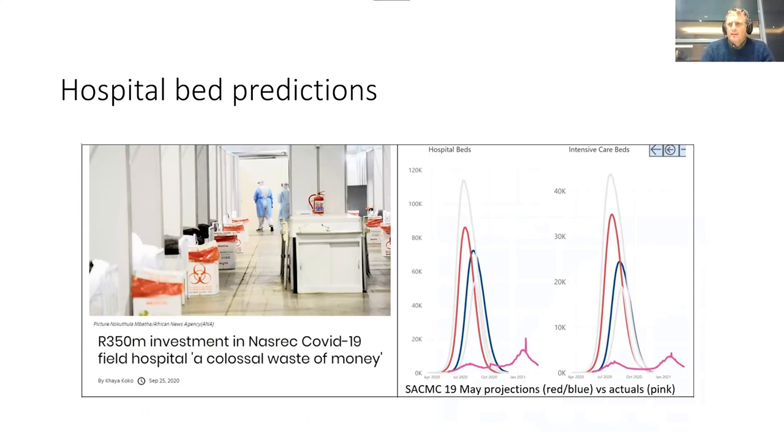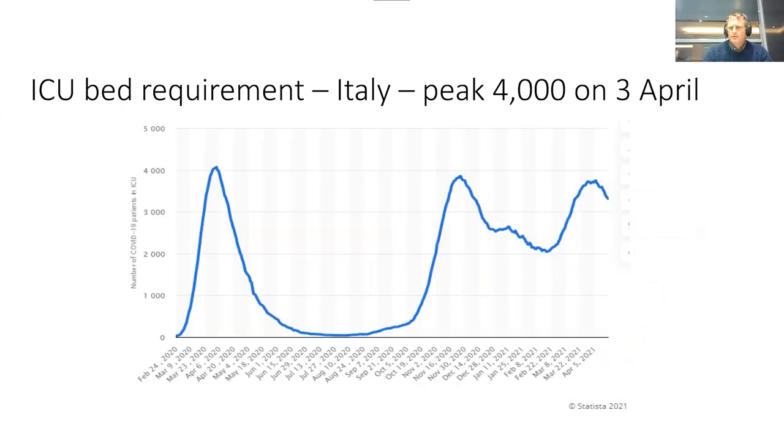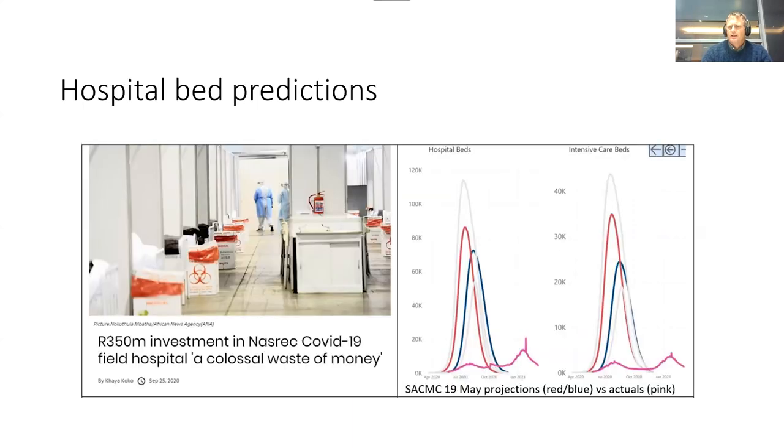However, at that stage, the South African COVID Modeling Consortium's numbers for hospital beds were still horribly wrong. A lot of expenditure was made based on these models, and there was no sanity check done to see if these projections are reasonable. Just to give an example of a very simple sanity check: Italy turned at 4,000 ICU beds on the 3rd of April already, and we had projections that were running 10 times higher. I brought out a public blog post a day after the 19th of May, questioning the hospital bed requirements.